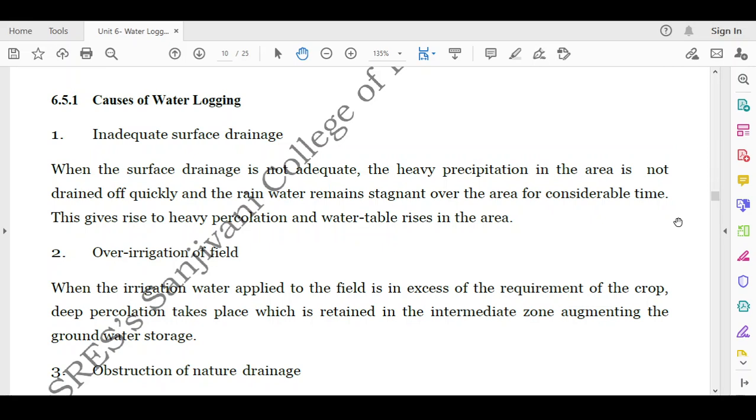Then over-irrigation of the soil. When the irrigation water applied to the field is in excess of the requirement of the crop, deep percolation takes place which is retained in the intermediate zone augmenting the groundwater storage. So it should be avoidable, over-irrigation. If the farmers are getting more frequently the water and more quantity of water, then it is a common tendency of the farmers to fetch more and more water. But until and unless it is necessary, it is advisable not to use excessive irrigation as it will result in water logging and further increasing in the salinity of the soil and decreasing the yield of the crops.